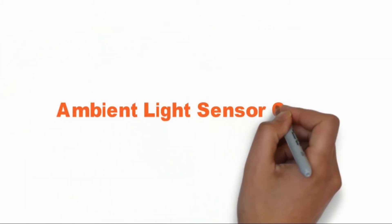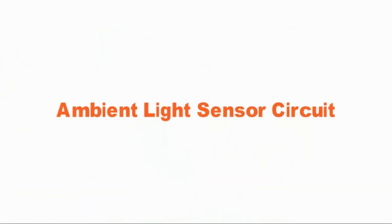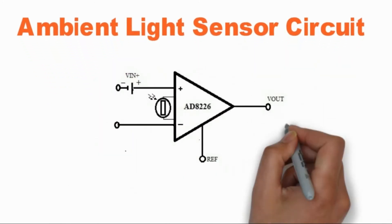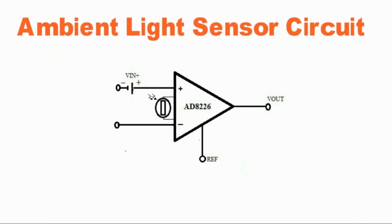Ambient Light Sensor Circuit. The ambient light sensor is considered as an energy harvesting source to control bathroom fixtures, remote weather sensors, heartbeat monitors, and low-power devices. The ambient light can be measured accurately using the harvesting system at the heart of energy.